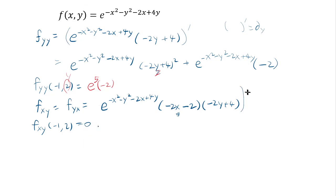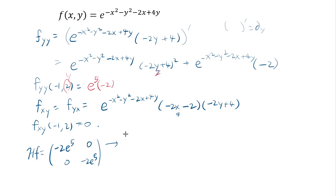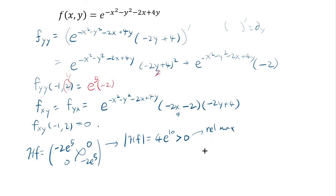This means the Hessian matrix at negative 1 comma 2 is [[negative 2e^5, 0], [0, negative 2e^5]]. The determinant is (negative 2e^5)(negative 2e^5) minus 0, which equals 4e^10. Since this determinant is positive, the critical point is either a relative max or a relative min.